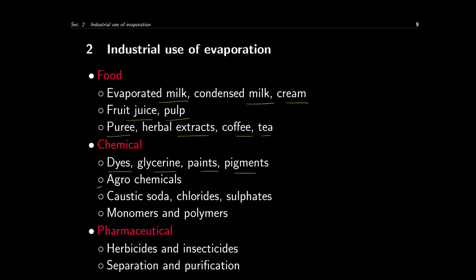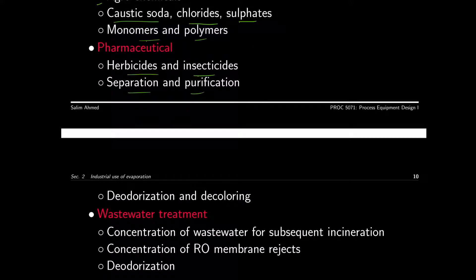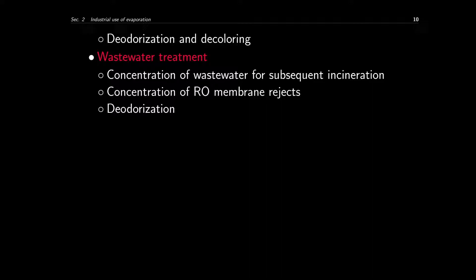Agrochemicals for producing caustic soda, chlorides, and sulfates, and in the polymer industry for producing monomers and polymers also use evaporation. Evaporation is also common in the pharmaceutical industry in the production of herbicides and insecticides, for both separation and purification, as well as for deodorization and decoloring. In the case of wastewater treatment, evaporators are used to concentrate the wastewater for use in an incinerator, for concentration of reverse osmosis membrane rejects, and for deodorization purposes.